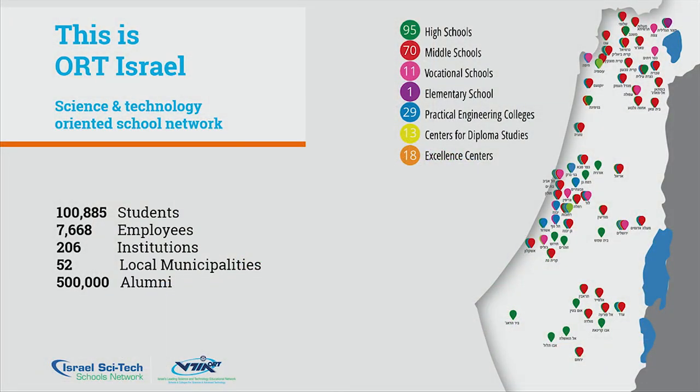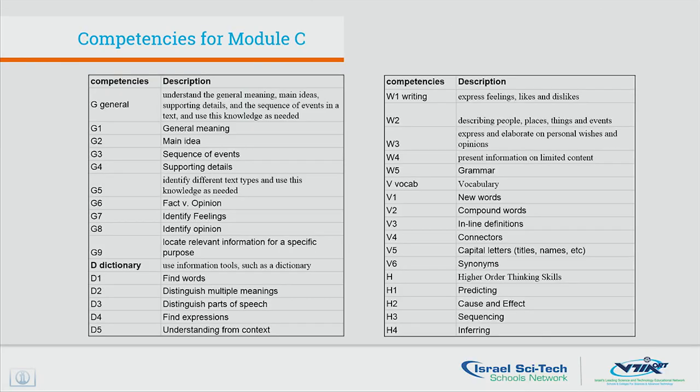You can see the amount of schools all around Israel over here. This is a list of competencies required by the Israeli Ministry of Education for Module C, part of the matriculation examination in English as second language. These competencies are grouped into five main categories: general, dictionary, writing, vocabulary, and higher order thinking skills.